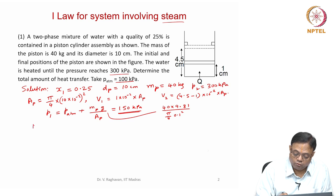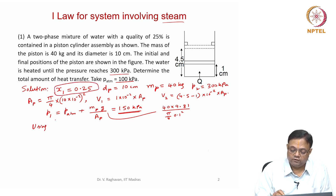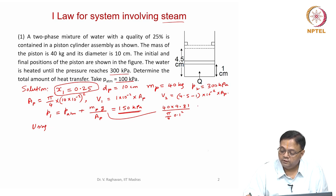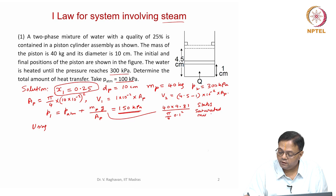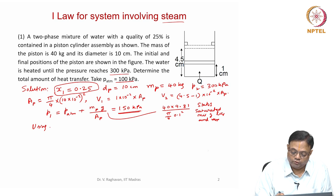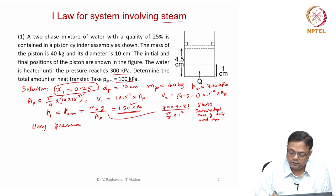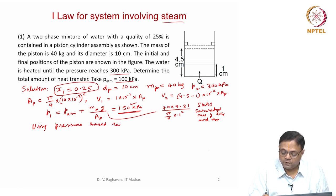State 1 is a saturated mixture of liquid and vapor since the quality is 0.25. Using the pressure-based saturation steam tables, because pressure is known, we look up at 150 kilopascals.